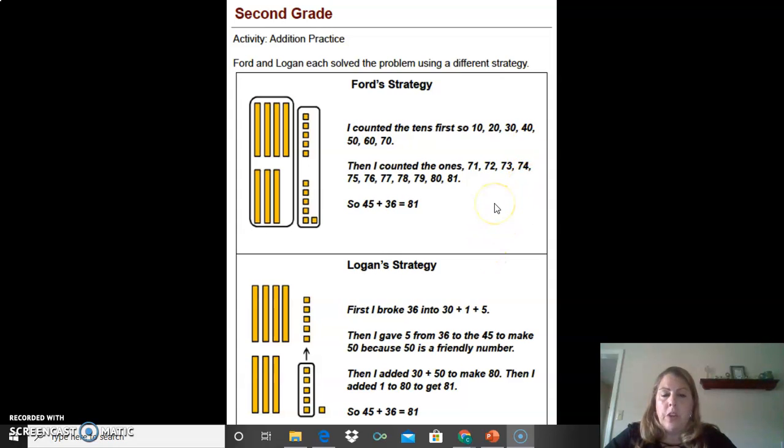For Ford's strategy, he counted the tens first. So he counted 10, 20, 30, 40, 50, 60, 70. Then he counted the ones: 71, 72, 73, 74, 75, 76, 77.